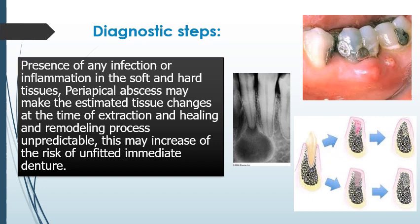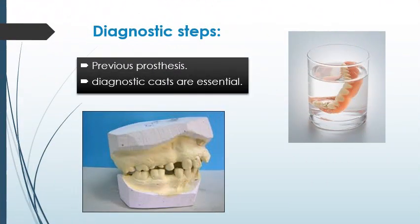The presence of any infection or inflammation in the soft and hard tissue must be assessed. A periapical abscess may make the estimated tissue changes at the time of extraction, healing, and remodeling unpredictable, increasing the risk of an ill-fitting immediate denture. If the patient has a previous prosthesis, that must also be considered. Diagnostic casts are essential — take a primary impression to make a diagnostic cast in order to study the case from all aspects.